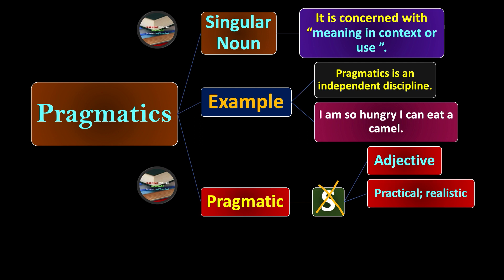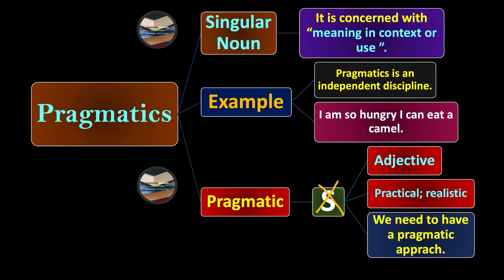Pragmatic without 's' has nothing to do with meaning—it's an independent word with a different shade of meaning. For example, we can say 'we need to have a pragmatic approach'—a practical, realistic approach. In contrast, we have the word semantics, which deals with the study of meaning.